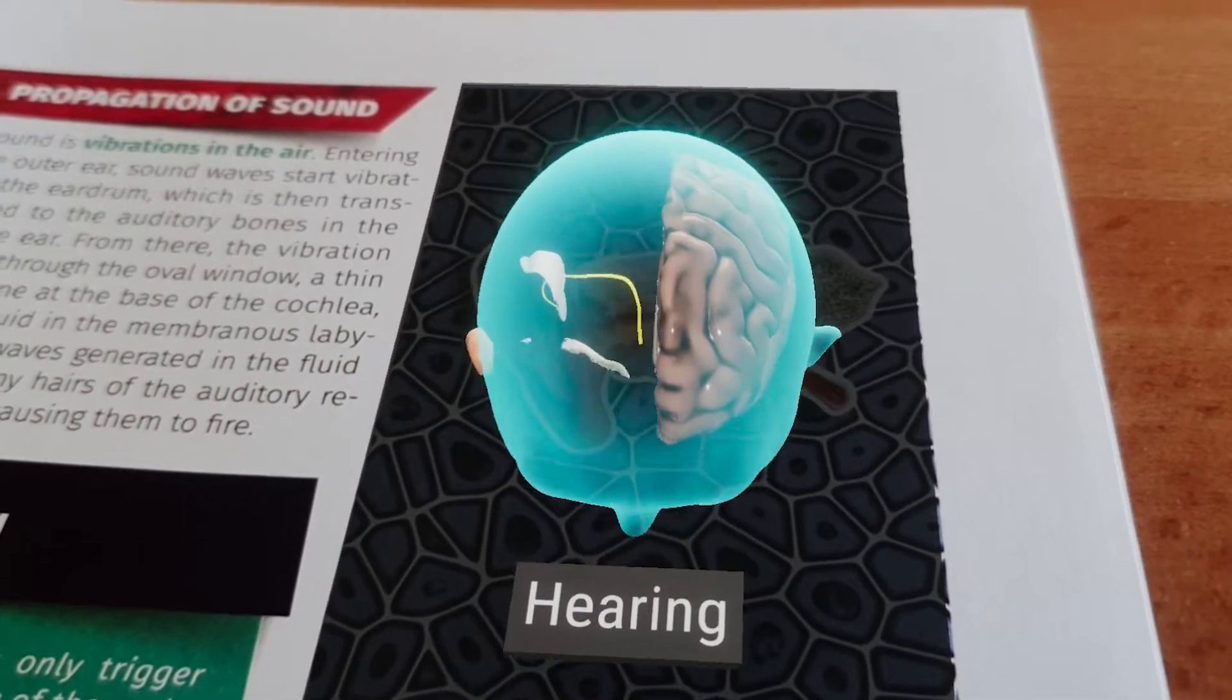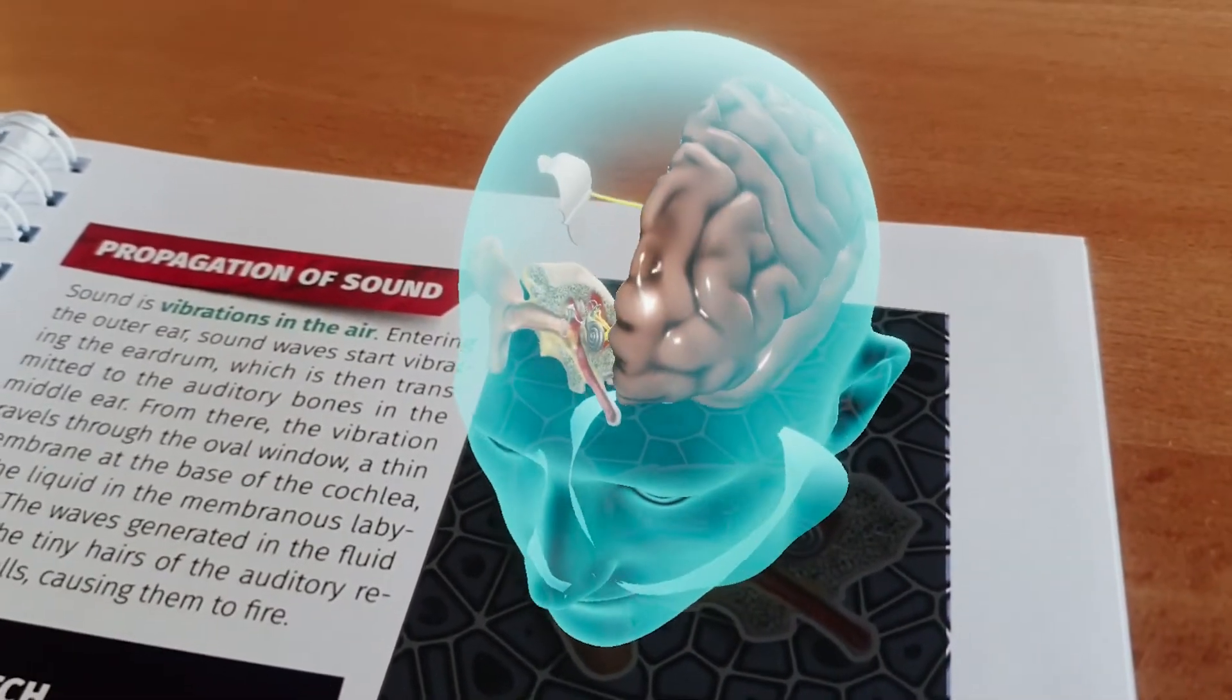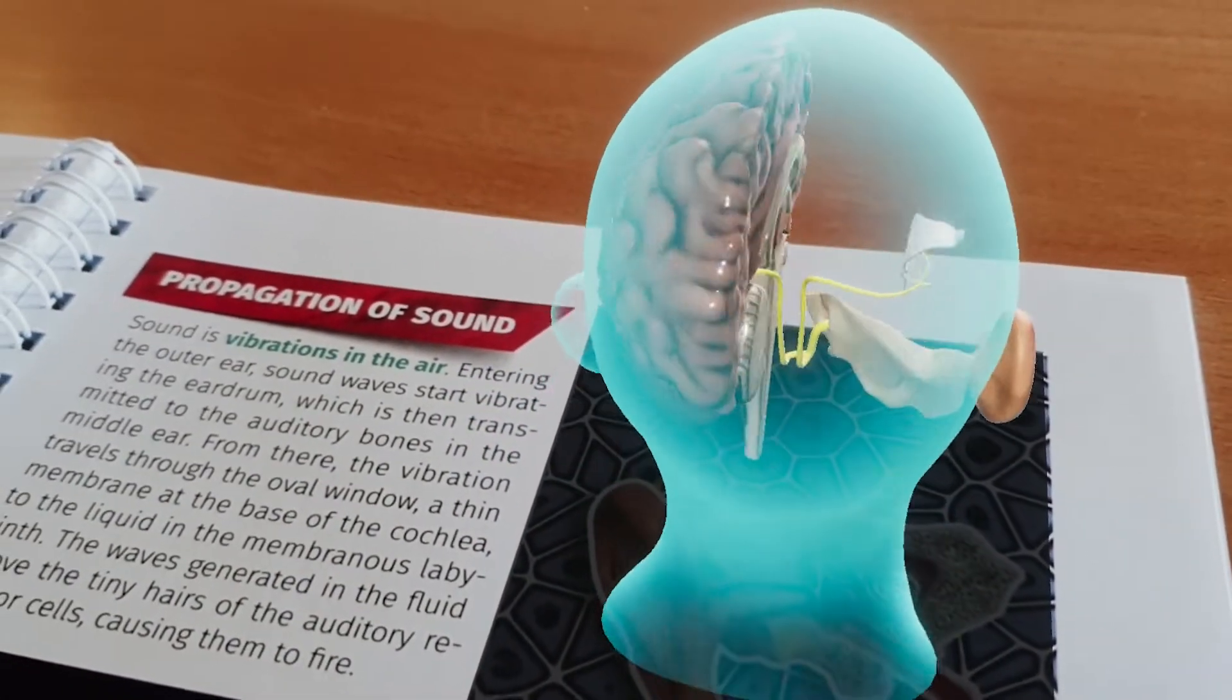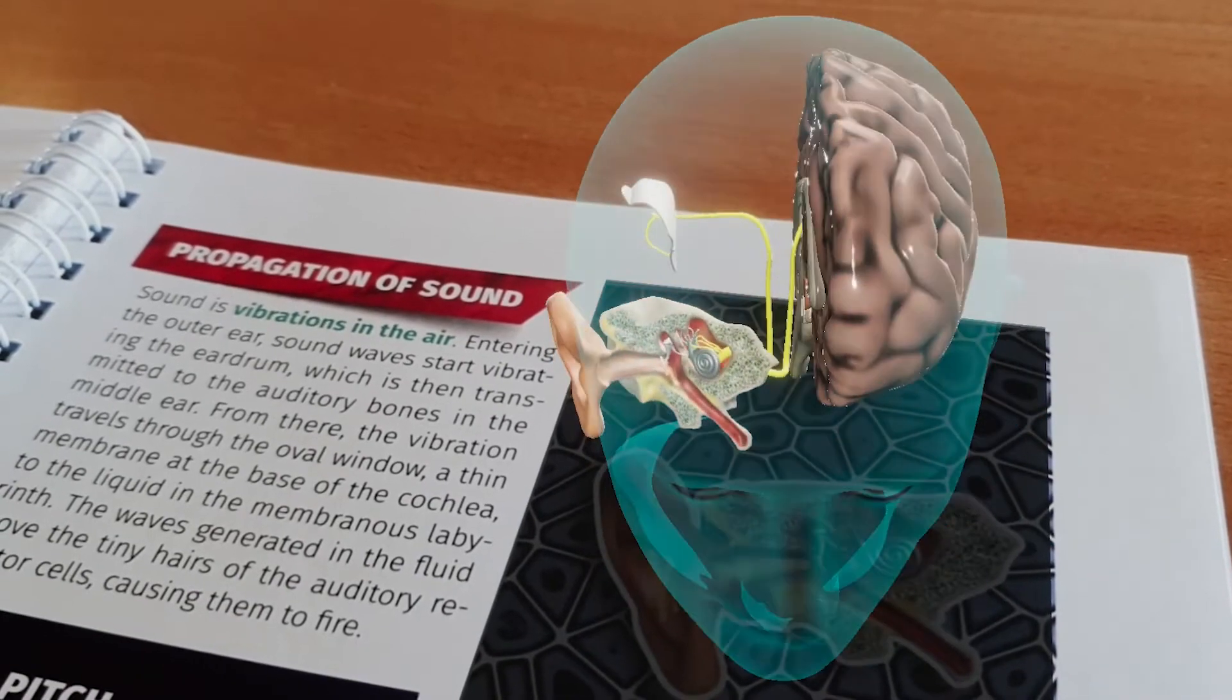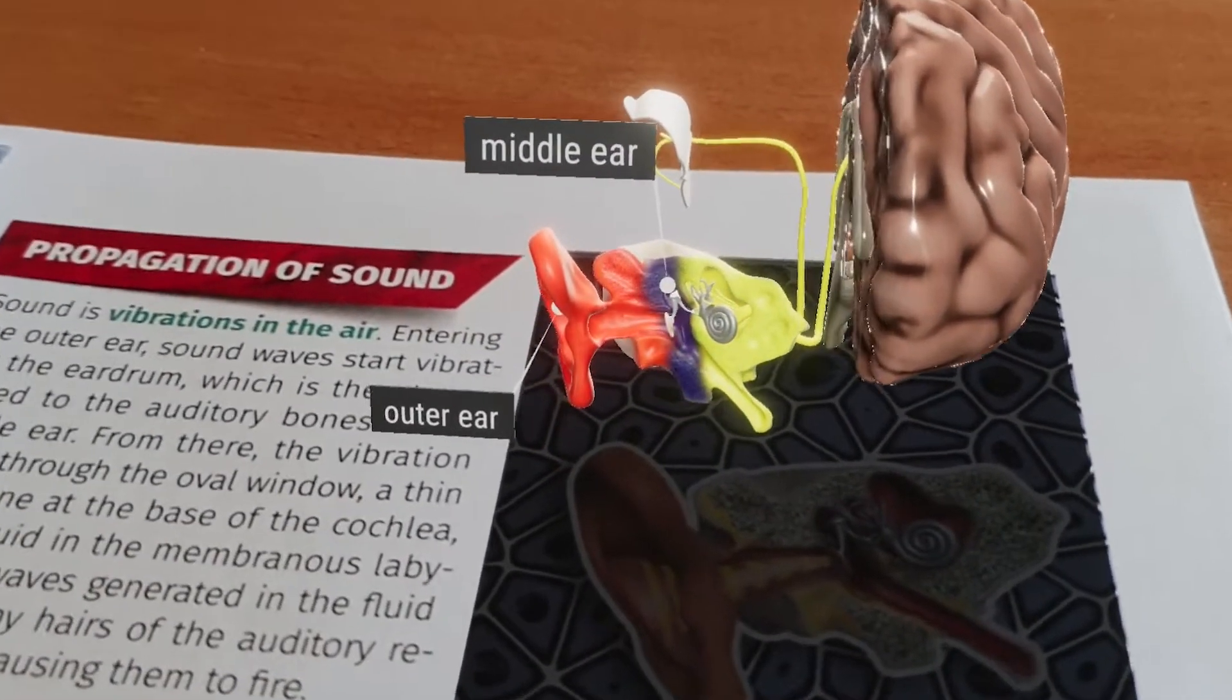Sound waves propagating as vibrations in the air are detected by our paired auditory organ, consisting of the outer, the middle, and the inner ear.